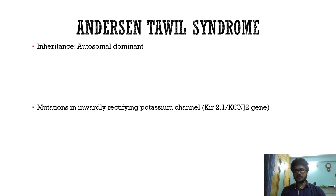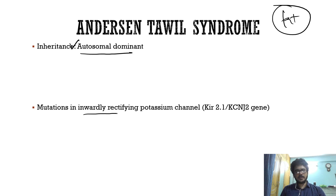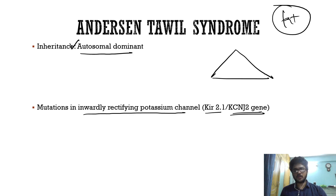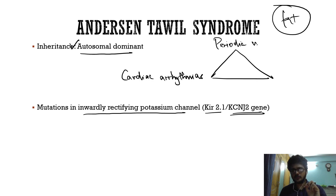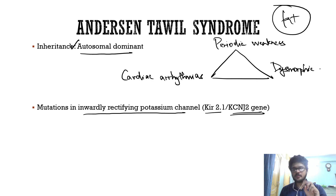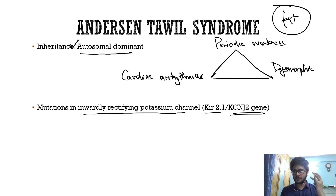Now coming to Anderson-Tawil syndrome. This is a potassium channelopathy — autosomal dominant — caused by a mutation in the inwardly rectifying potassium channel, KCNJ2. Three things should come to mind: first, cardiac arrhythmias — most importantly long QT syndrome and bidirectional ventricular tachycardia; second, periodic or episodic weakness; and third, dysmorphic features.